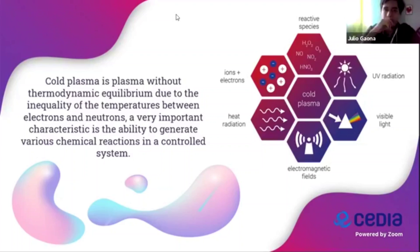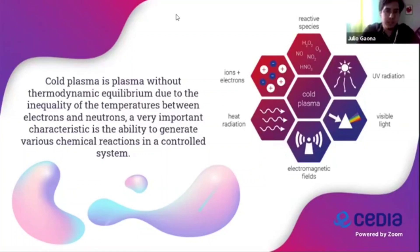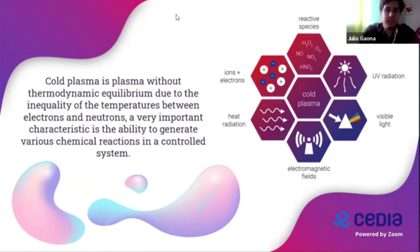Cold plasma is plasma without thermodynamic equilibrium, due to the inequality of temperatures between electrons and neutrons. A very important characteristic is the ability to generate various chemical reactions in a controlled rate system.